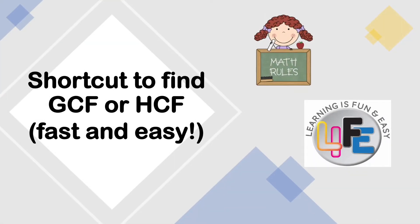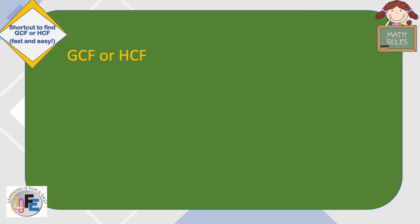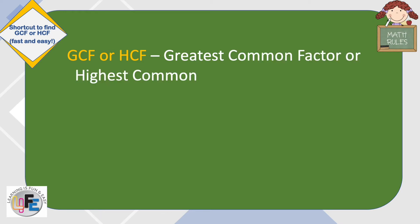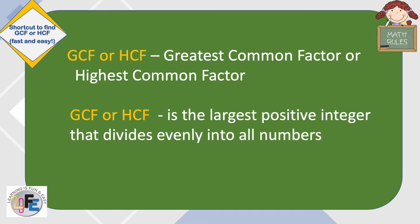Let's find GCF or HCF in a shortcut way. GCF or HCF stands for greatest common factor or highest common factor. It is the largest positive integer that divides evenly into all numbers with zero remainder.